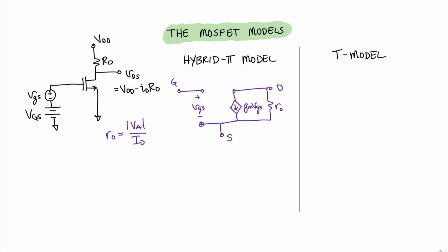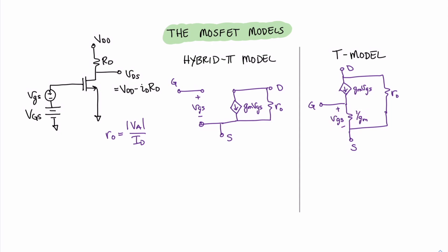Alternatively, we have the T model. It's very similar in that it uses a dependent current source, but its shape is a little different and is sometimes more amenable depending on the circuit being analyzed. In this model, we have a current source and a resistance modeled as 1 over GM — which makes sense because transconductance is in units of 1 over ohms, so 1 over that value gives a resistance. We again have our output resistance modeling channel length modulation. Both models have the current source pointing down, reflecting the negative gain value — which means a 180-degree phase shift, not a smaller gain.